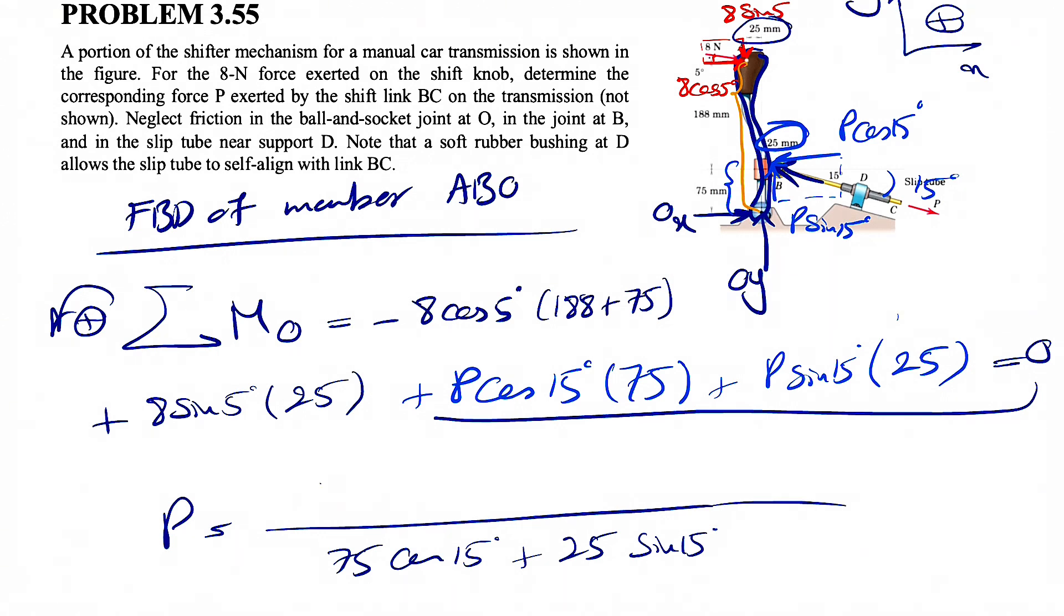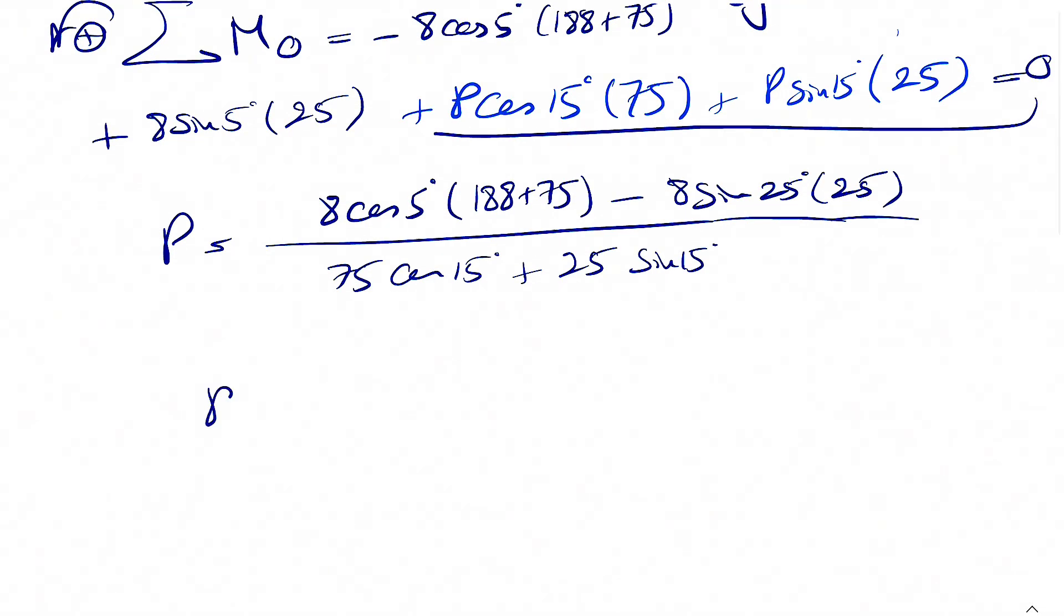we're going to have 75 cosine of 15 plus 25 sine of 15. And in the numerator, we're going to have 8 cosine of 5 times 188 plus 75 minus 8 sine of 5 times 25. So we just have to calculate this.